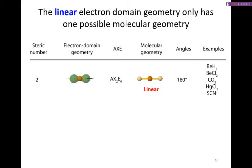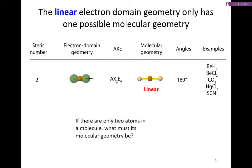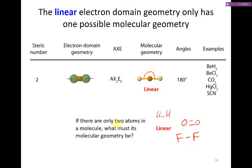The linear electron domain geometry has only one molecular geometry. If there are only two atoms the molecule must be linear. Diatomics like hydrogen gas, oxygen gas, and fluorine gas are all linear because we're describing the bond angle between them. Even if there is a lone pair on an end atom, the molecular geometry remains linear.